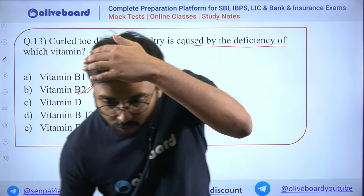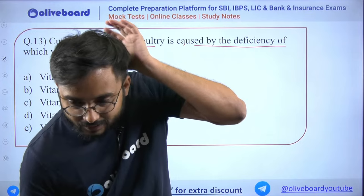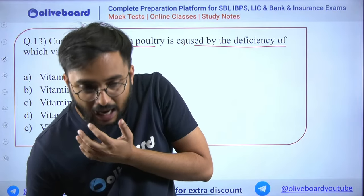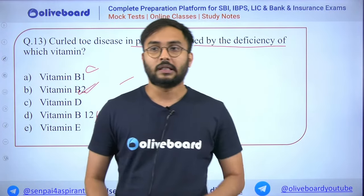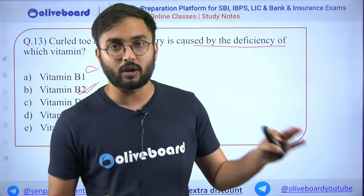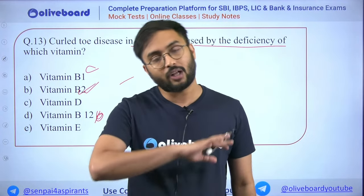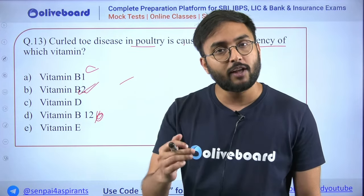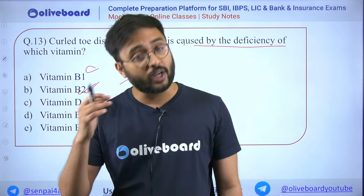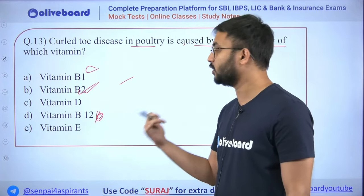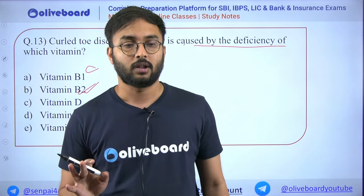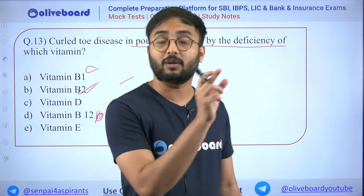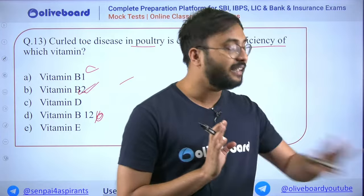Why is the proportion of allied subjects so high in this exam? IBPS AFO requires BSc Agriculture qualification, so all allied subjects are given equal importance. The syllabus is similar to NABARD but the depth of questions in AFO is much higher — NABARD is nowhere close to AFO in difficulty.